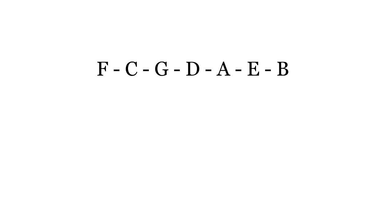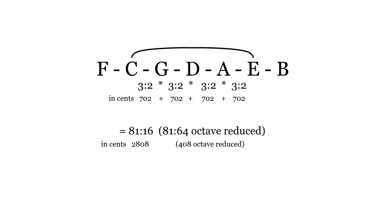Let's look at the scale's other intervals. You get a major third in this scale by stacking four fifths. If you tune those fifths to the just ratio three to two, the major third will have the ratio 81 to 64.